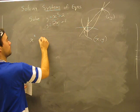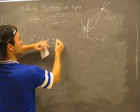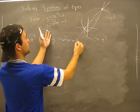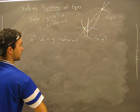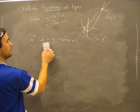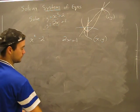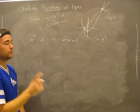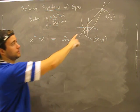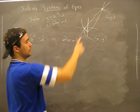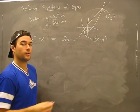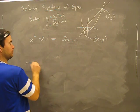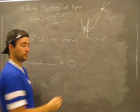Y equals this, and y equals this — y also equals this. So therefore, this must equal that top. x squared minus 2 equals y, but y also equals 2x plus 1. Therefore, x squared minus 2 must also equal 2x plus 1.